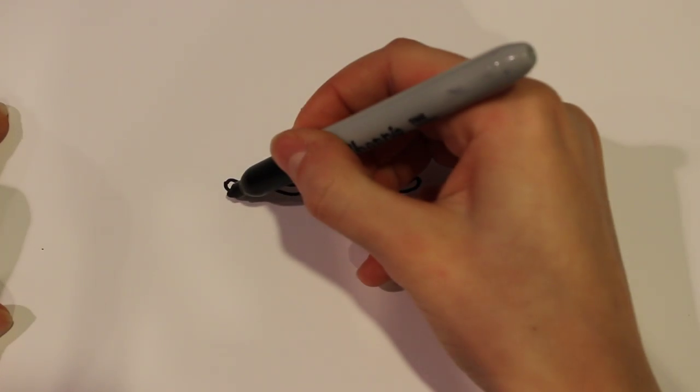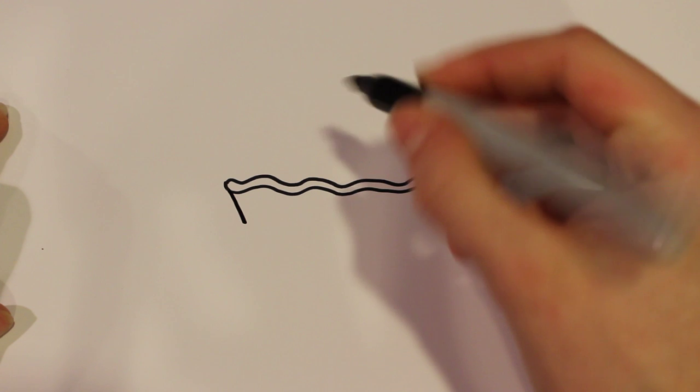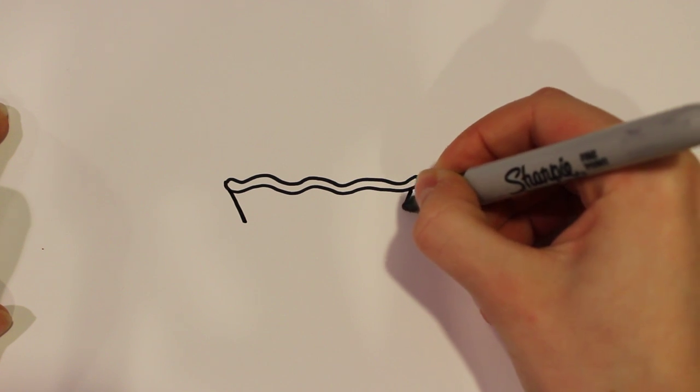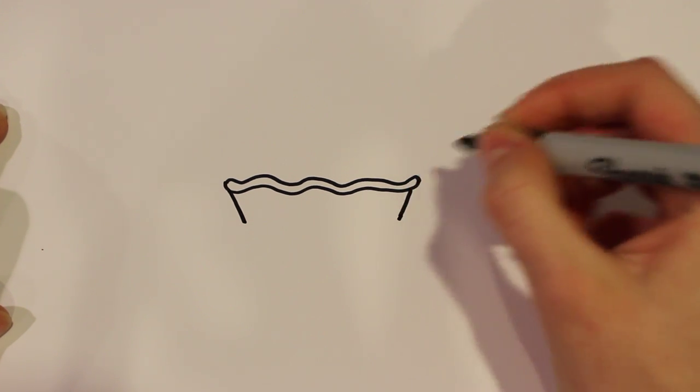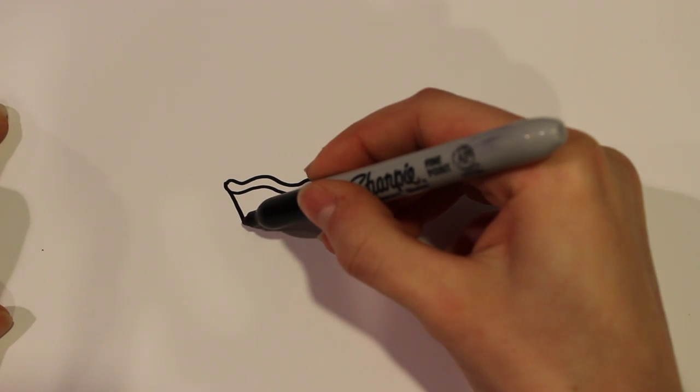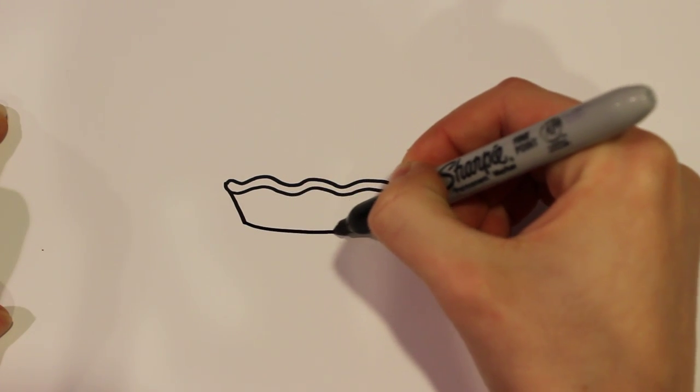And then from there you can draw the pan which is just going to be two lines that are facing inward like that and then another curved line at the bottom to connect both of them.